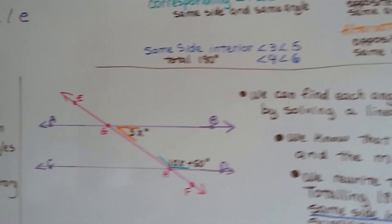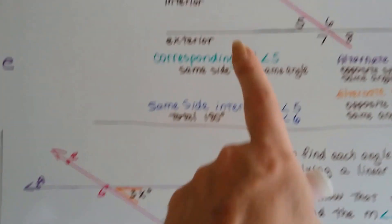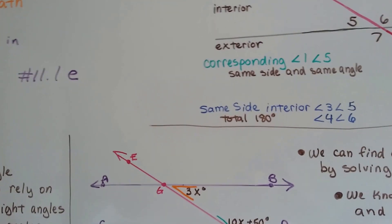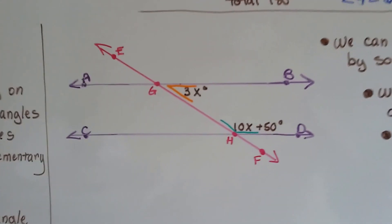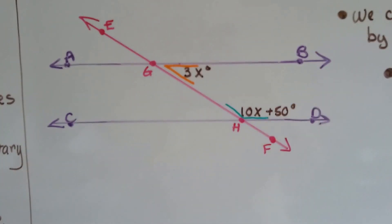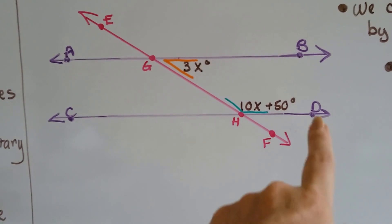So let's take a look at this drawing. If you don't know what I'm talking about with any of these, then you've skipped ahead and you should go back to 11.1a. We've got our set of parallel lines here. This is line AB and this is line CD.